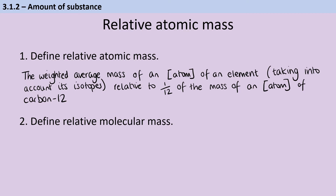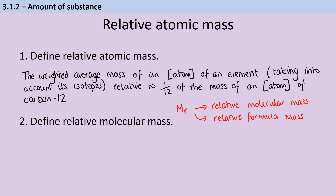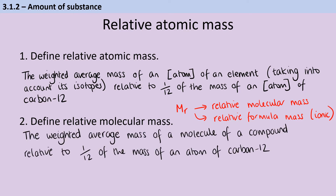Relative molecular mass is represented by the symbol MR. Confusingly, this can be used to represent either relative molecular mass, if we're talking about a molecular substance, or relative formula mass, which is the name we use for the same idea when thinking about ionic substances. Relative molecular mass is a weighted average mass of a molecule of a compound, rather than a single atom, relative to one-twelfth of the mass of an atom of carbon-12 — in other words, it's the mass of one mole of that substance in grams.